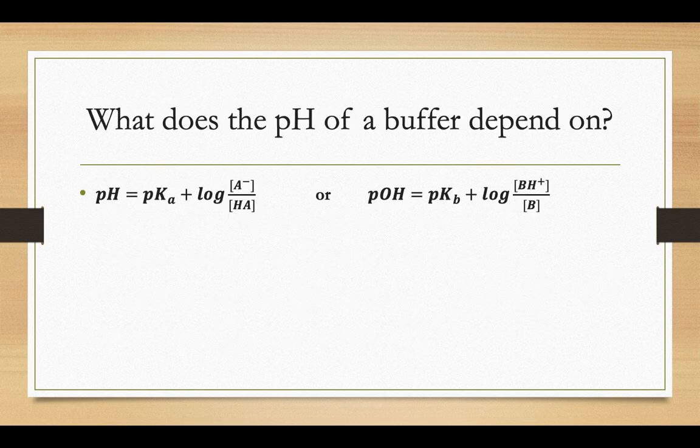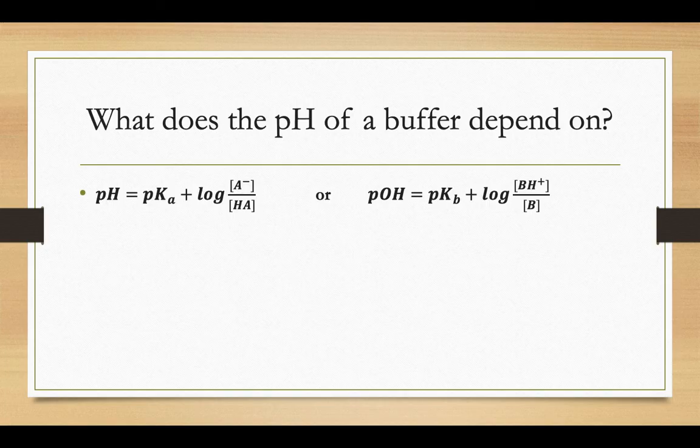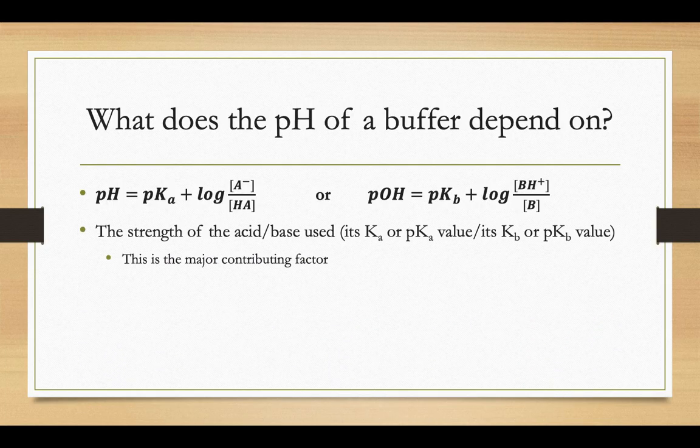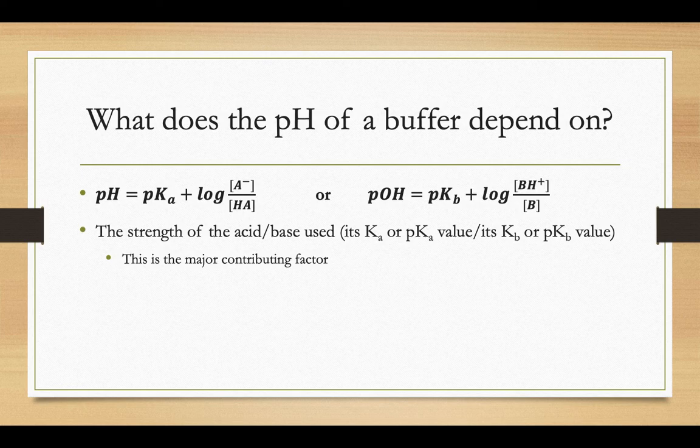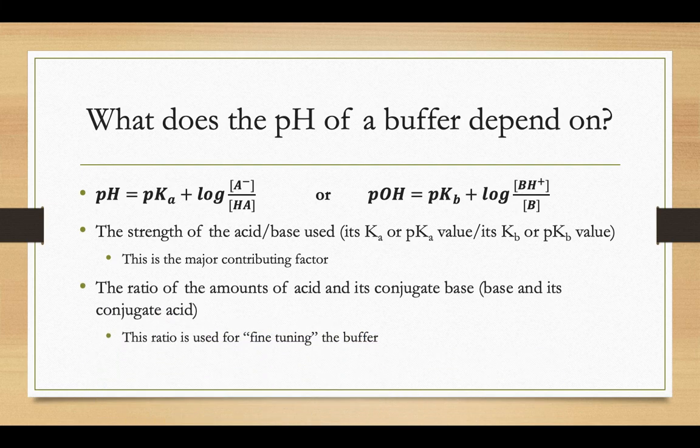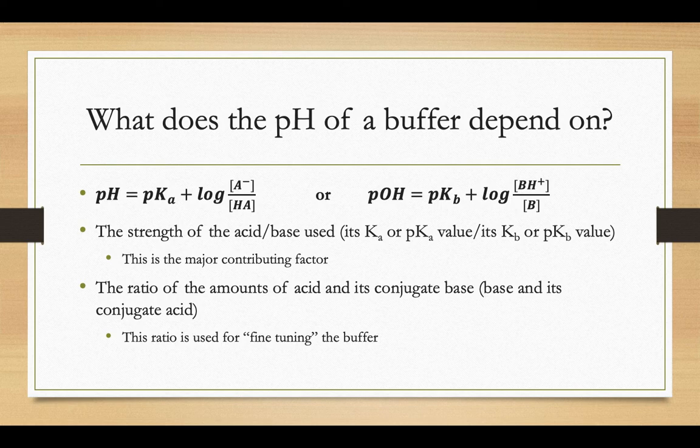So, what does the pH of a buffer depend on? When you look at the equation there, it depends on the strength of the acid or base used. So, its Ka, pKa value. That's the big factor. And then you can kind of fine-tune your buffer by adjusting the amounts of acid and conjugate base that you're using, the molarities of that A- and HA.